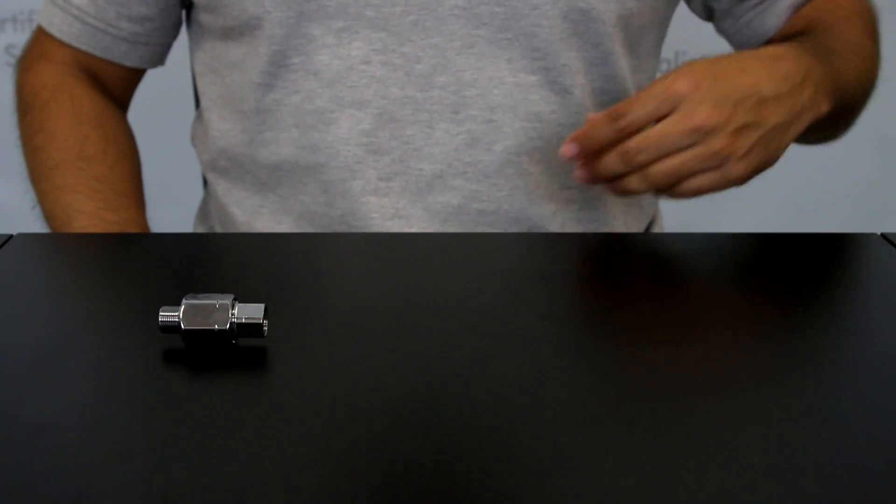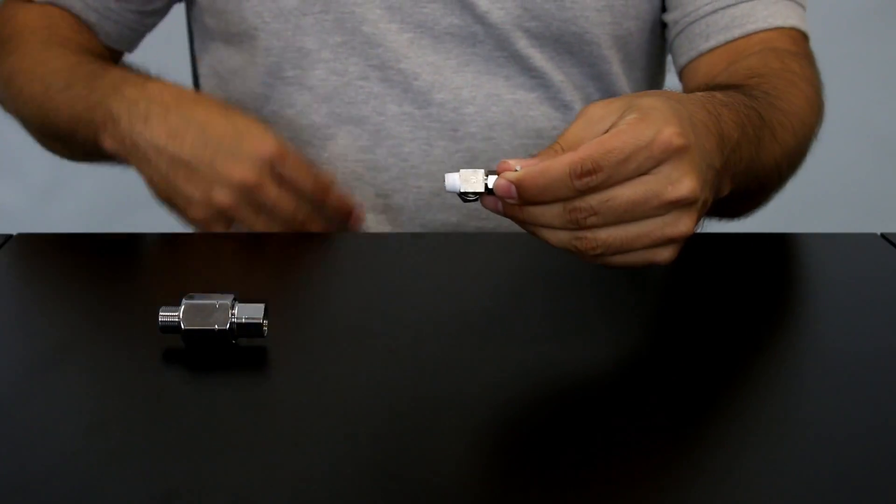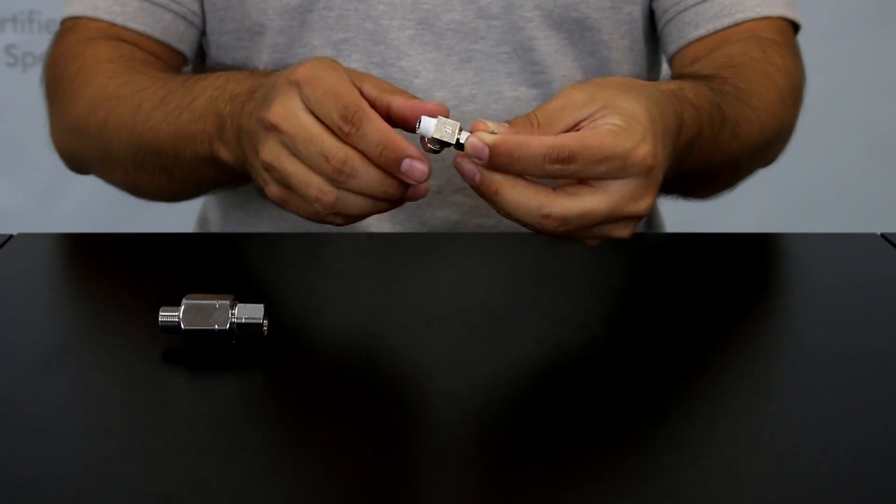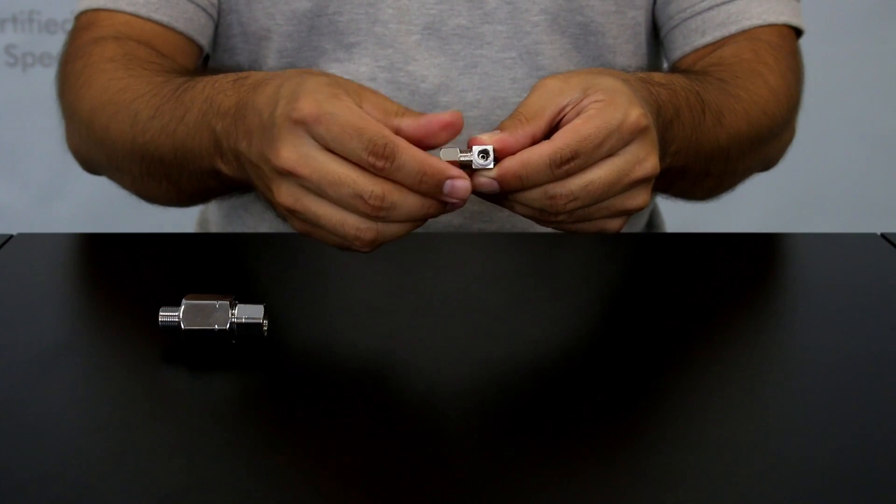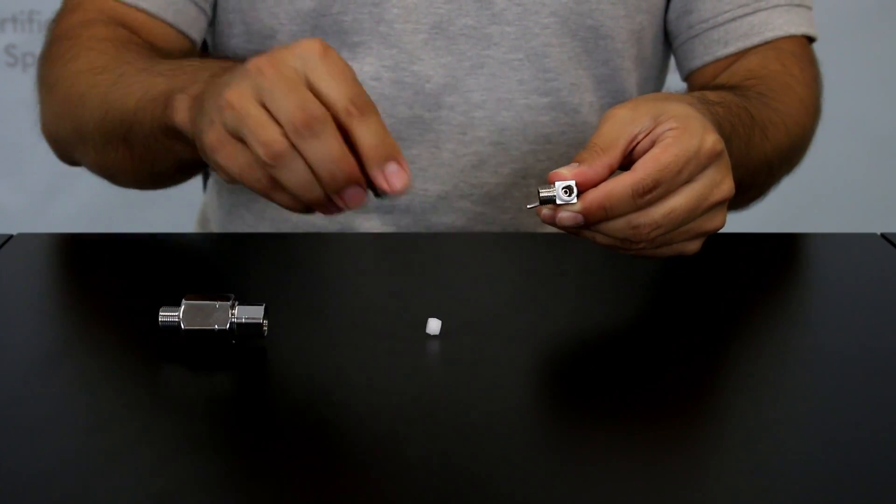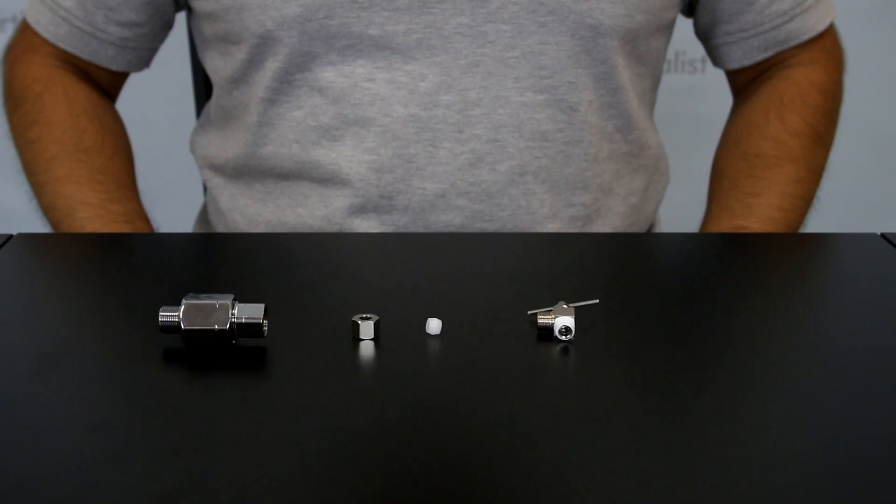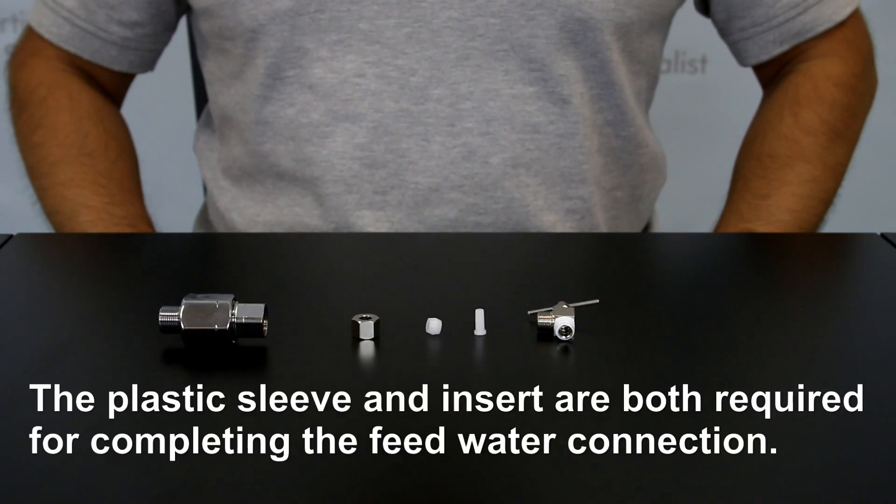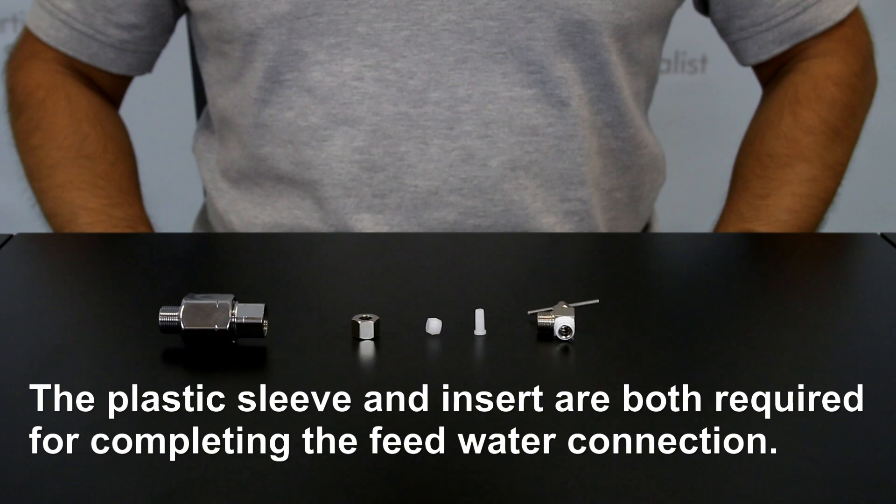To assemble the needle valve portion that screws onto the feed water adapter, apply five to six wraps of Teflon tape to the needle valve threading. Upon unscrewing the metal compression nut you will see a plastic sleeve is placed inside. You will also notice a plastic insert is provided. Please note the sleeve and insert are both required for the feed water connection towards the end of the installation.